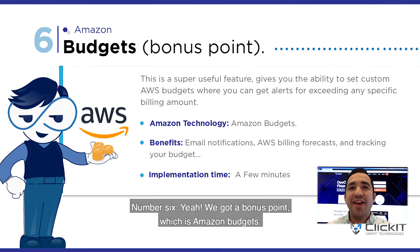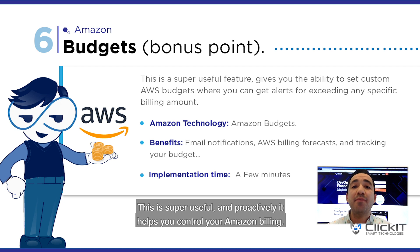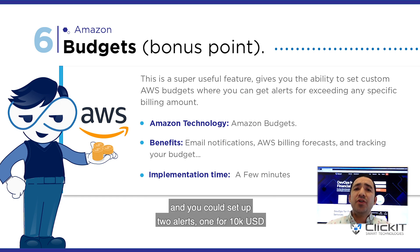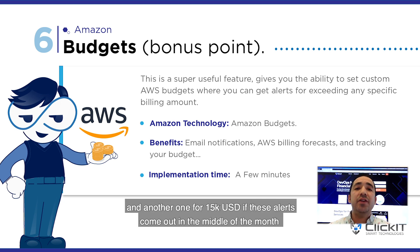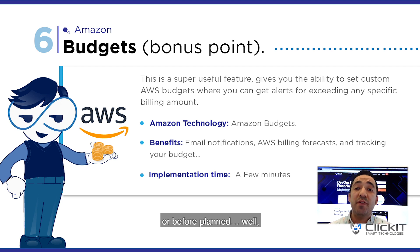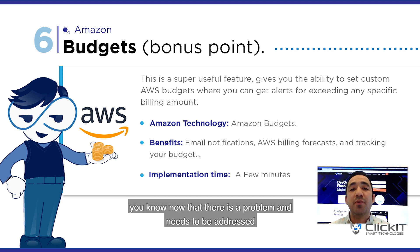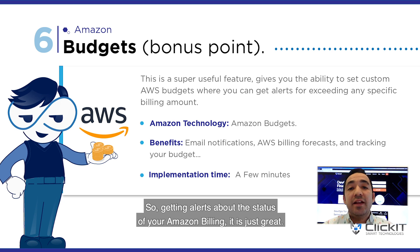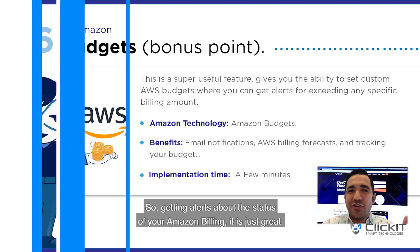Number 6 — a bonus point — is Amazon Budget. This is super useful and proactively helps you monitor your Amazon billing. Let's say you're planning to spend 20k USD per month. You could set up alerts — one for 10k USD and another for 15k USD. If these alerts trigger in the middle of the month, you know there is a problem that needs to be addressed right away before the end of the month. Getting alerts about your AWS billing spike is just great.